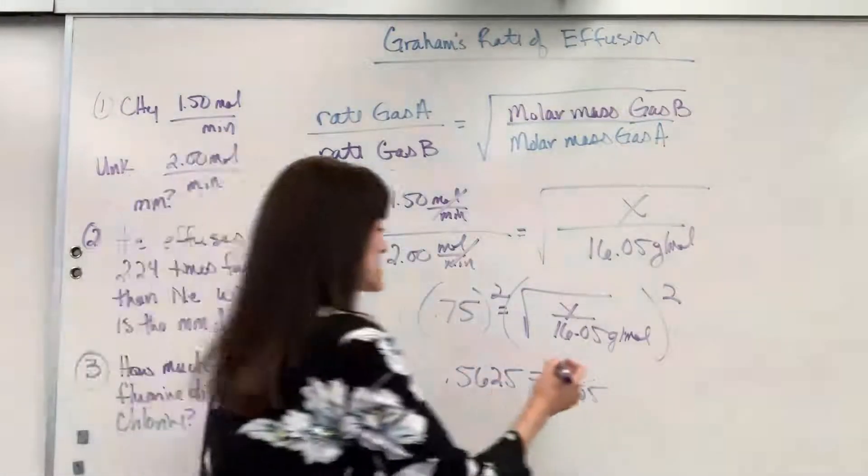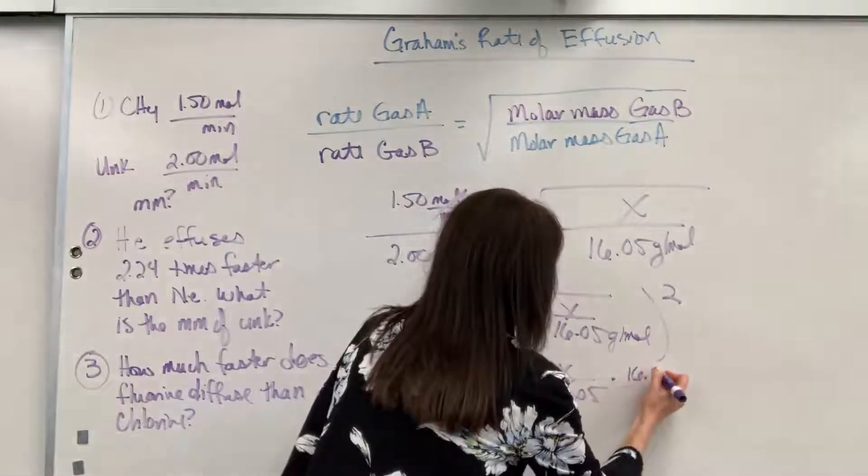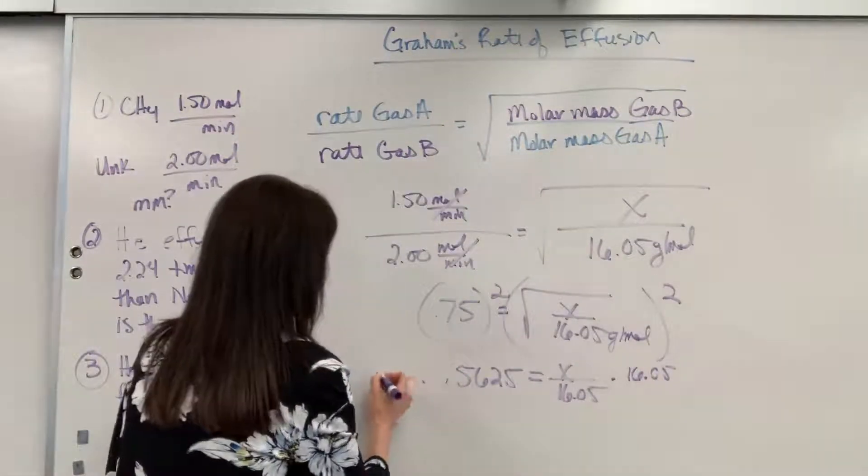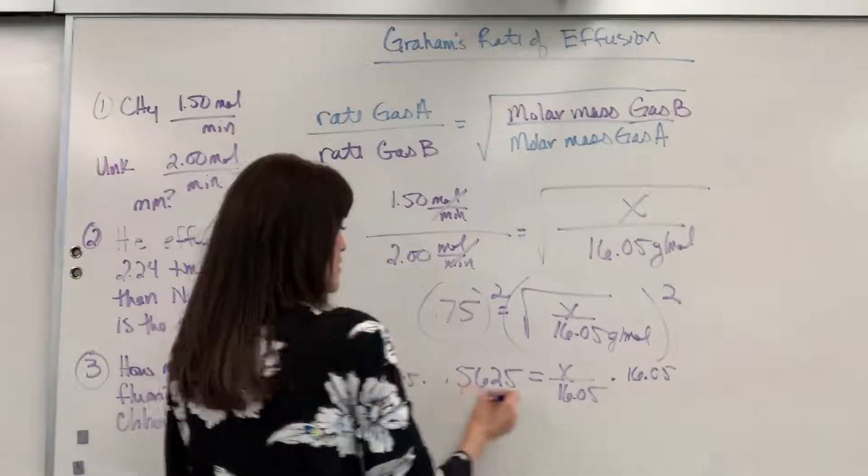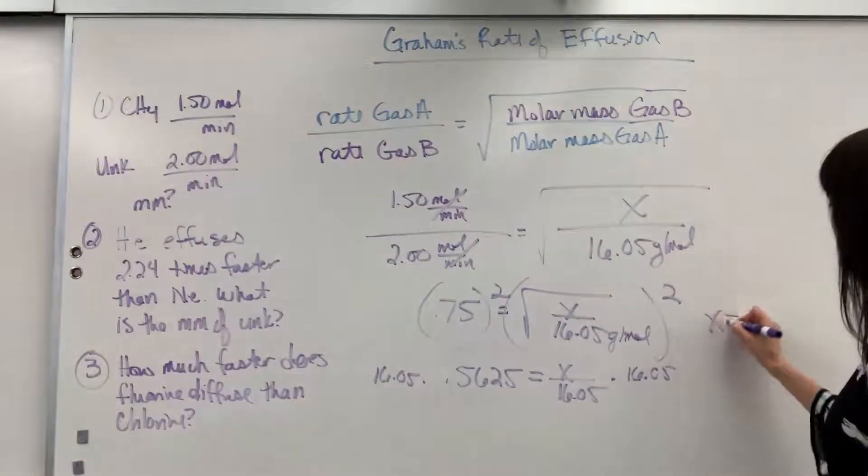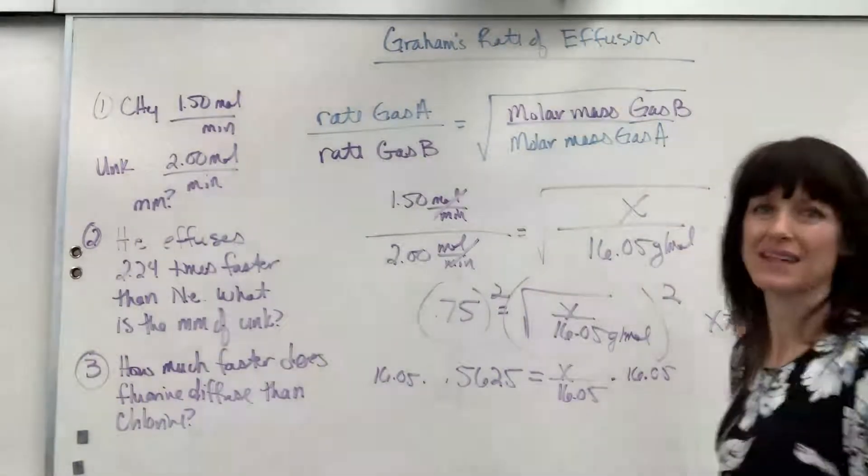Now, I want to solve for x, so let's multiply both sides by 16.05 times 16.05, and x will equal 9. x equals 9.